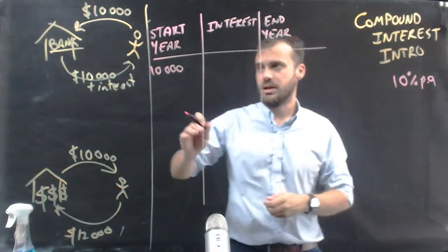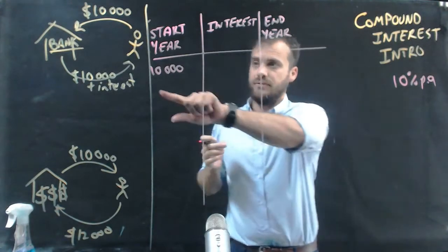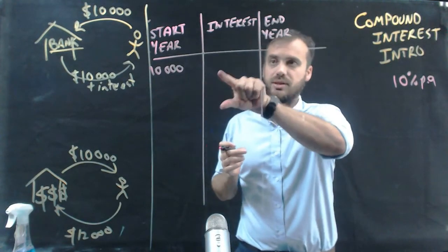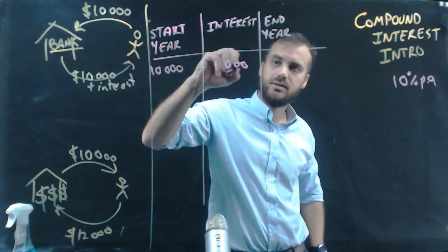Okay, so that means that if your money is with the bank for one year, if you've got $10,000 in there, then they're going to pay you the interest of $1,000.